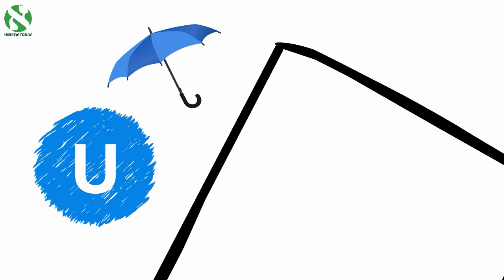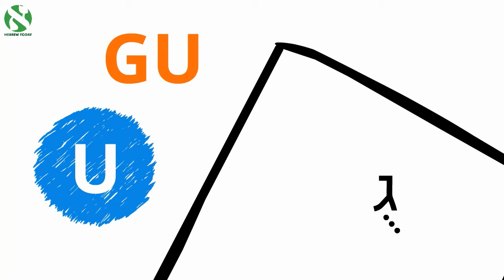And finally, the last Nikud sound is U, like in the word blue. So in order to make the sound GU, we would add this Nikud symbol. This sound can also have a Nikud form with the Vav. Without the Vav, it is called a Kubutz. And with the Vav, it is called a Shuruk.